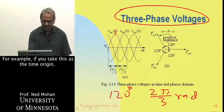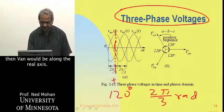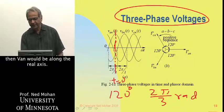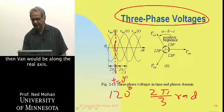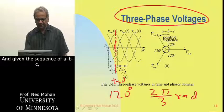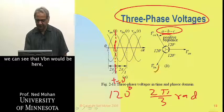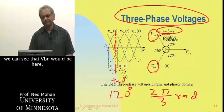If you take this as the time origin, where phase A voltage is peaking — if you take this as T equal to 0 — then VAN would be along the real axis. And given the sequence of ABC, you'll see that VBN would be here, and VCN would be over here.